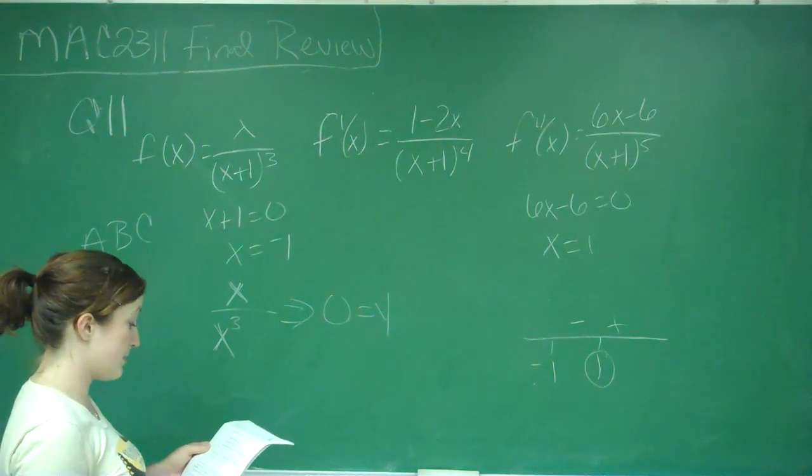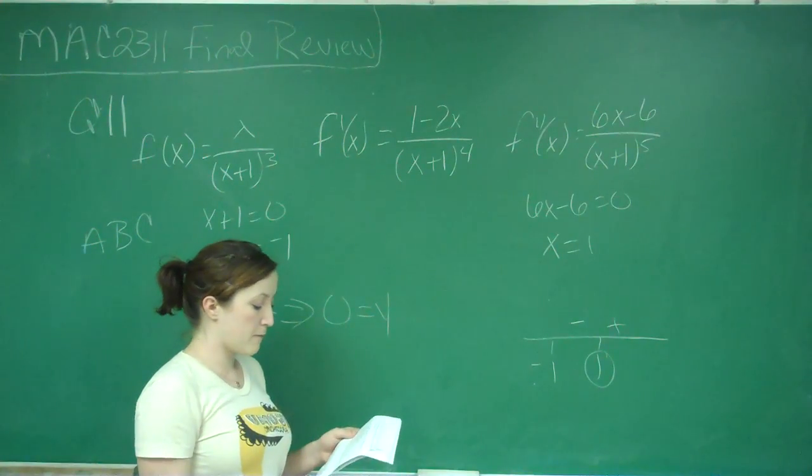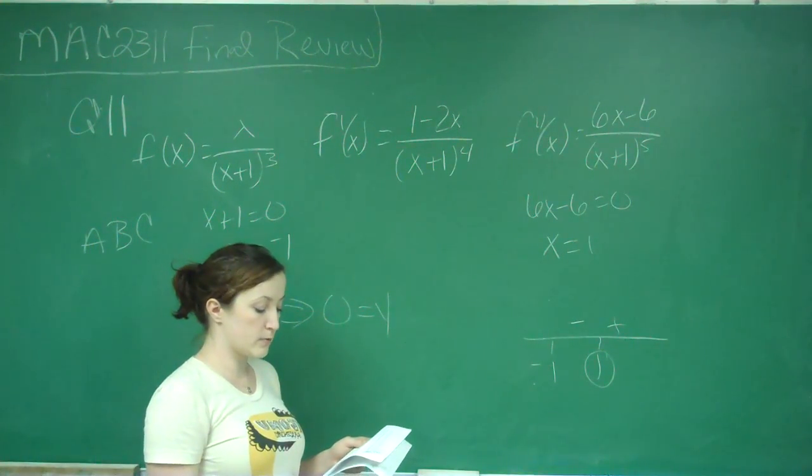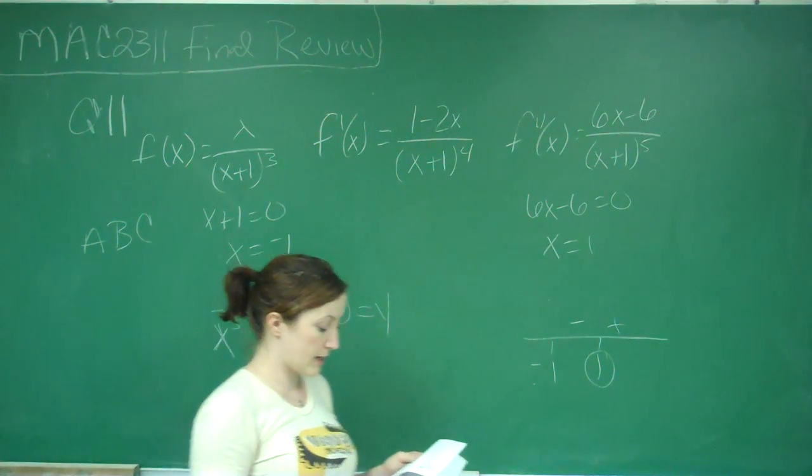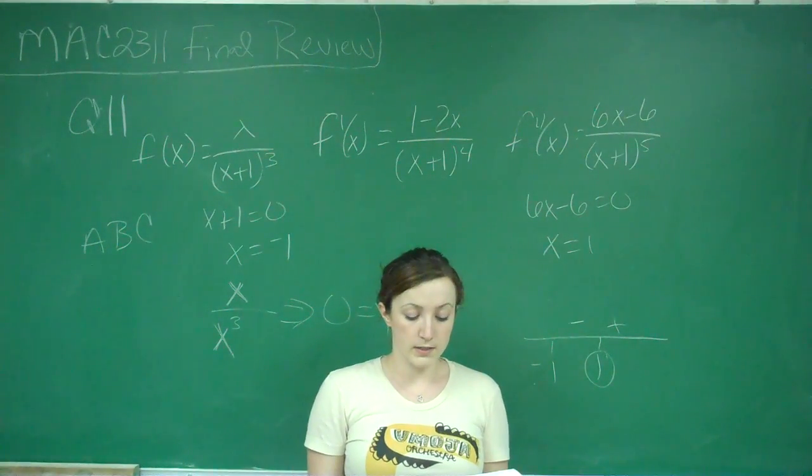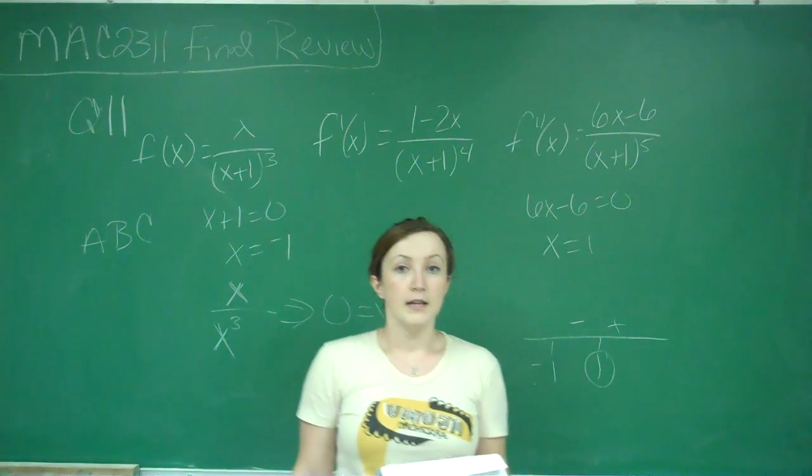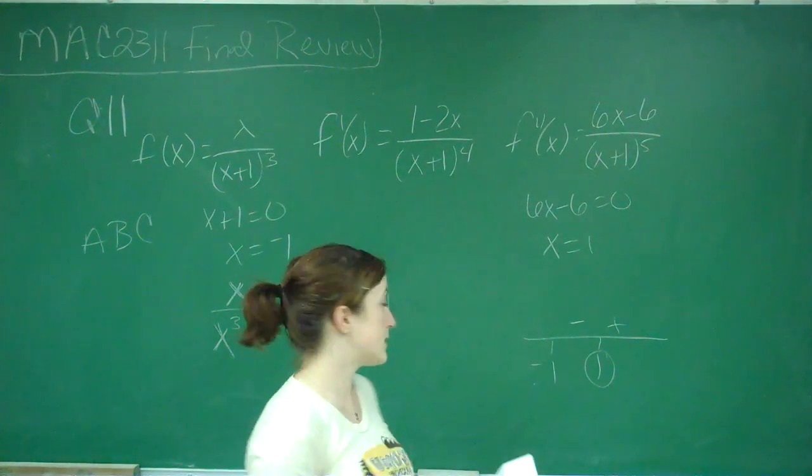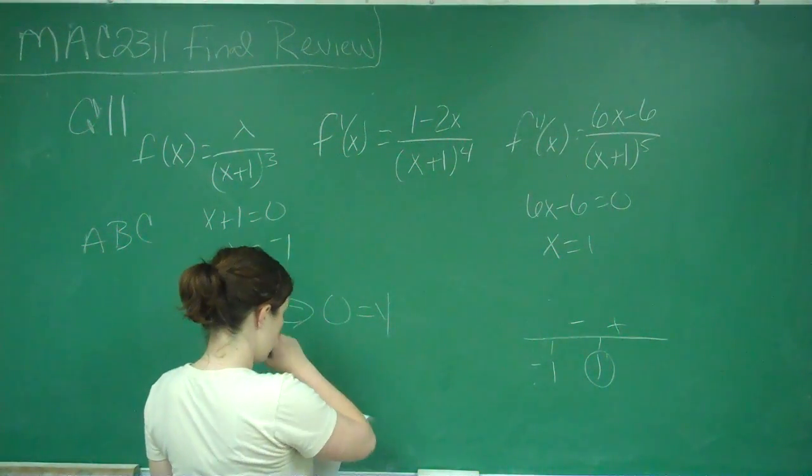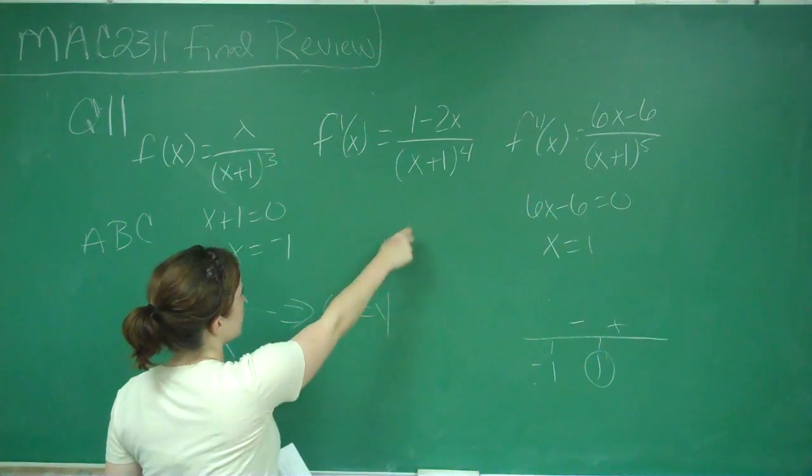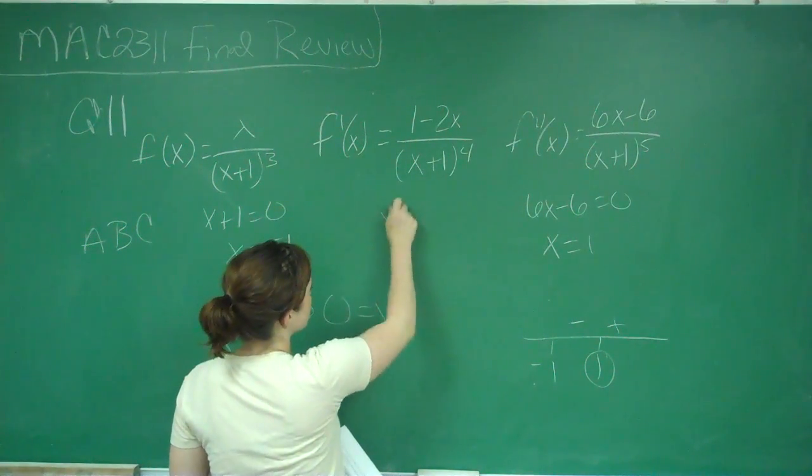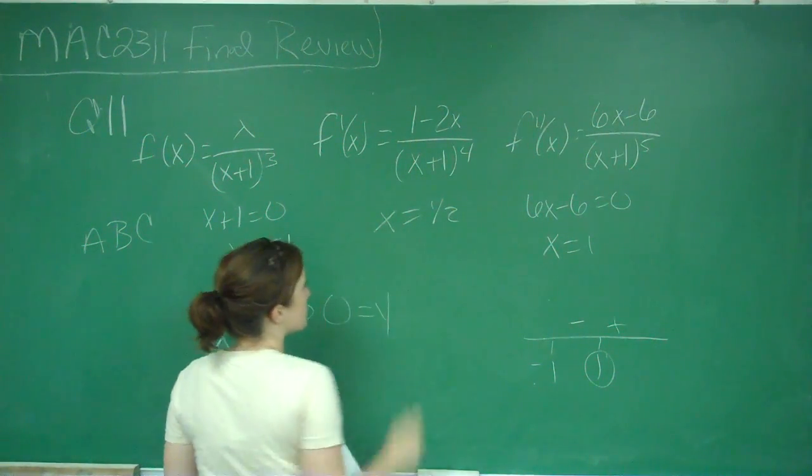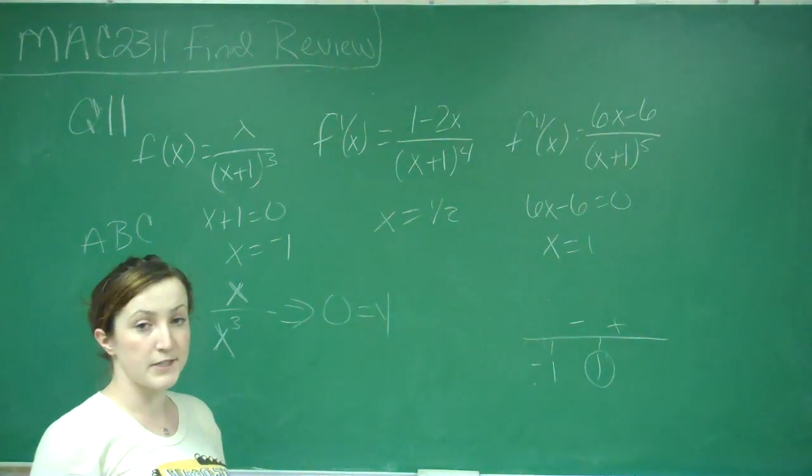And then D, just to check, says f of x has a horizontal tangent line at x equals 1 half and a vertical tangent line at x equals 1. So a horizontal tangent line means that in our first derivative, plugging it in would give us 0. So we already talked about this, but if I set the top equal to 0, I do get x is equal to 1 half. So I do know that we do have a horizontal tangent line at 1 half.